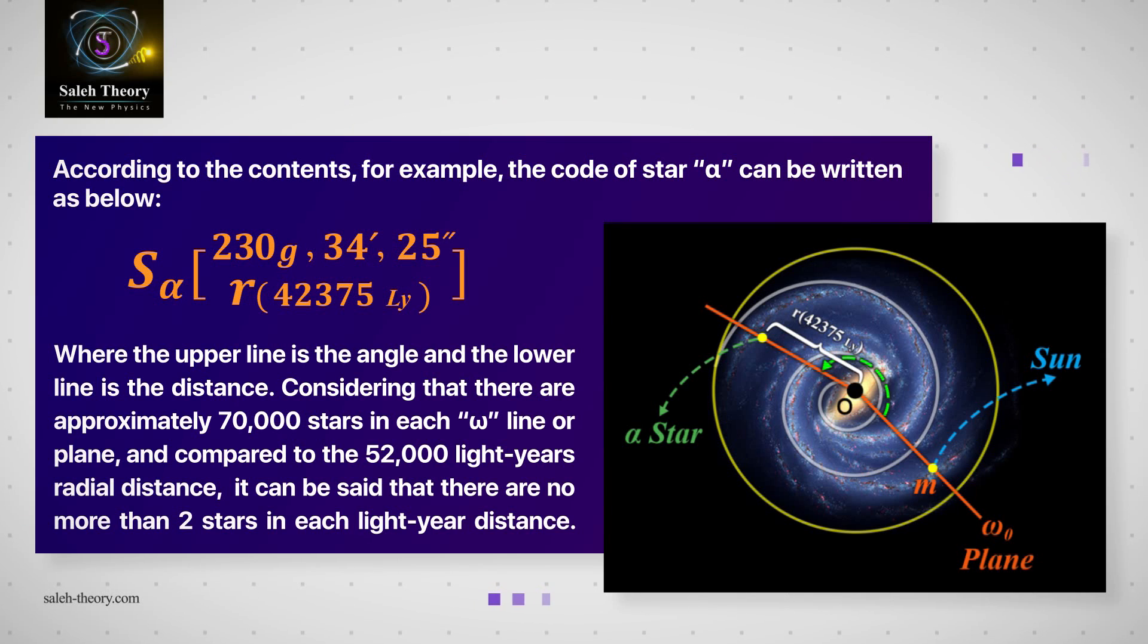Considering that there are approximately 70,000 stars in each omega line or plane, and compared to the 52,000 light years radial distance, it can be said that there are no more than two stars in each light year distance.